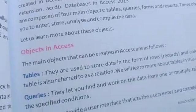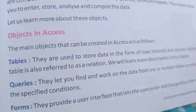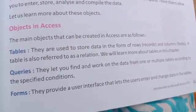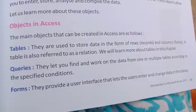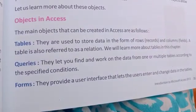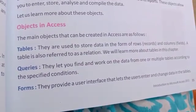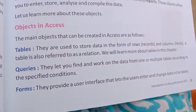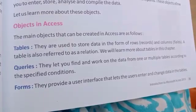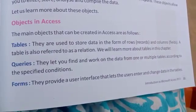A table is a collection of records and data. Just like in MS Excel, the intersection of rows and columns forms a table. In a database, rows are called records and columns are called fields.